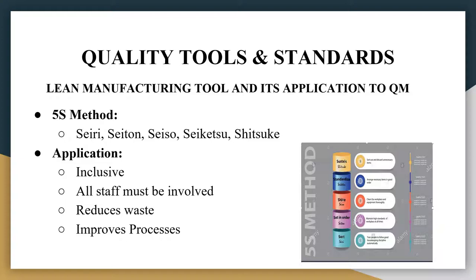The 5S method is a tool that allows you to have a clean, safe, and secure environment that is well organized. The method goes in the order of Seiri, Seiton, Seiso, Seiketsu, and Shitsuke — which means sort, set in order, shine, standardize, and sustain. Its application to quality management, assurance, and control is seen here because it is an inclusive method where all members of staff from top management to junior staff have to be involved. It allows you to reduce waste and improve your processes.